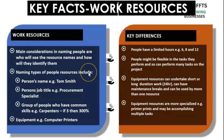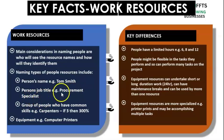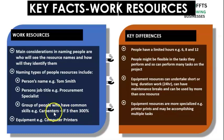Let's look at some other key facts about work resources. One of the main considerations in naming people is who will see the resource names and how will they identify them. There are three ways of naming people in this project, and we are applying this same way to Excel. You can use the name, for example Tom Smith; you can use the position, for example procurement specialist; or you can use categories of people — groups, like carpenters, laborers, or masons. It may not make sense to call each by their name, so if you see 300% in terms of availability, it means there are three people.